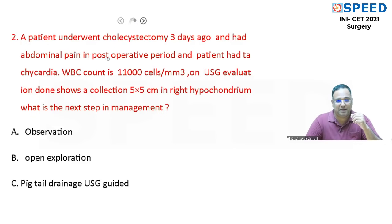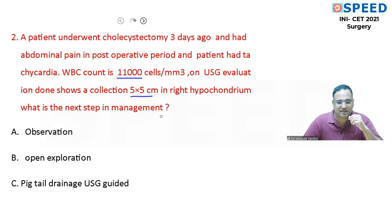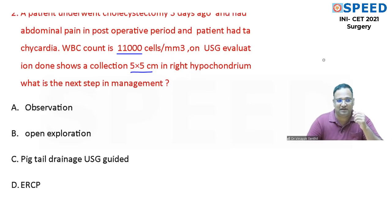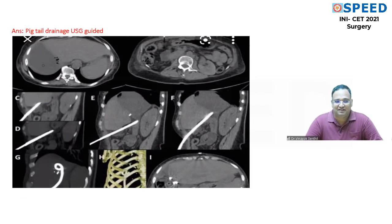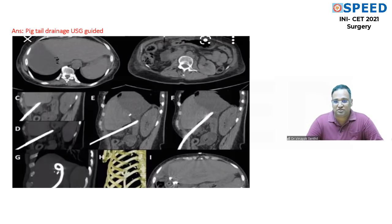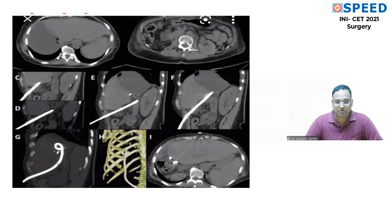Question number two: A patient underwent cholecystectomy three days ago and had abdominal pain in the post-operative period with tachycardia, WBC count of 11,000, and ultrasound showing a collection of 5×5 cm in the right hypochondrium. What is the next step in management? The answer is pigtail drainage under ultrasound guidance — abscesses anywhere in the body must be drained. A CT-guided or ultrasound-guided pigtail catheter insertion will drain the collection.